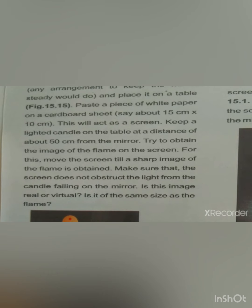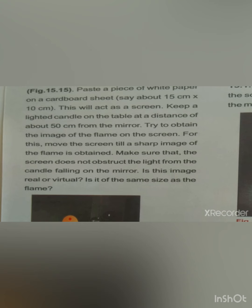Take a concave mirror in a stand — any arrangement, but keep the mirror steady and straight. Paste the white paper on the cardboard sheet; it will act as a screen. Place the lighted candle on the table at a distance of about 50 cm. Try to obtain the image of the flame on the screen by moving the screen until you get a sharp image. Make sure the screen does not obstruct the light from the candle falling on the mirror.